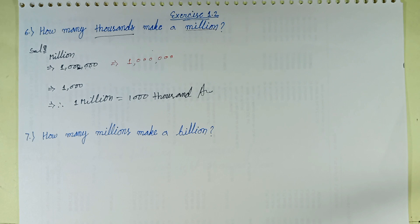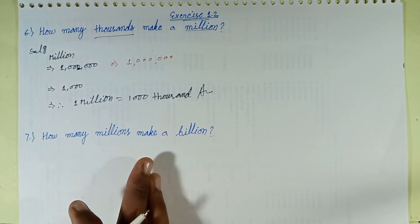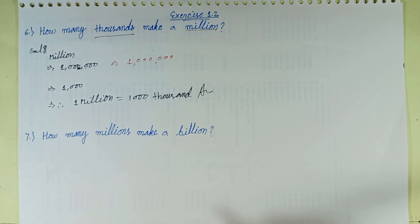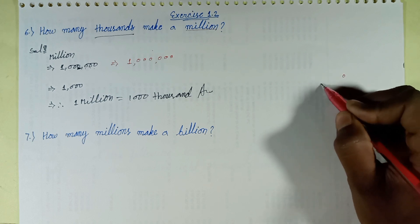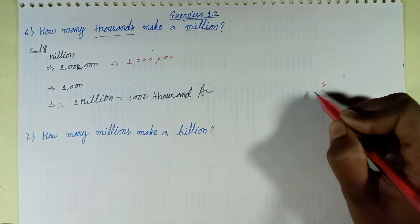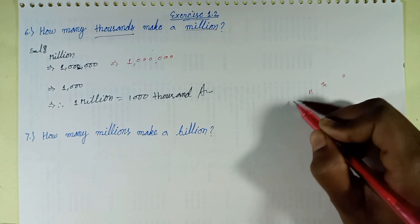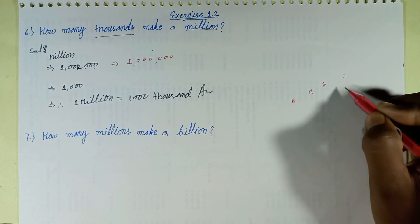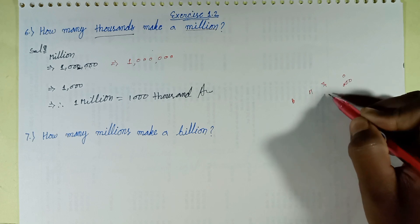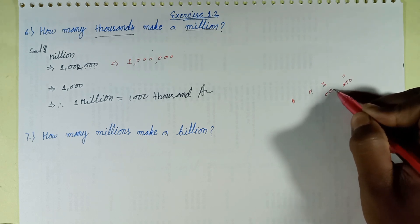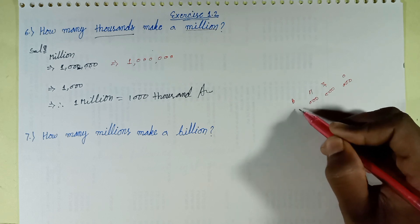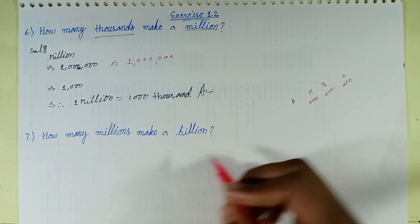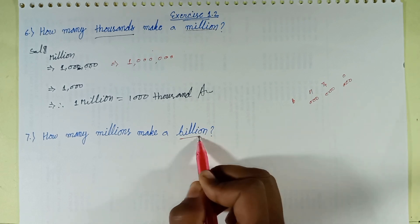Next question: how many millions make a billion? First, we write one billion in periods — the ones period, the thousands period, the millions period, and the billions period, each as a group of three digits.